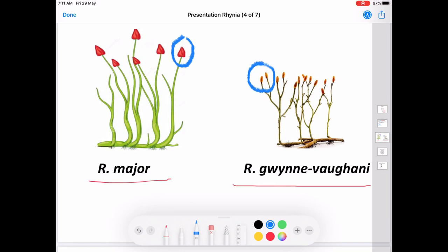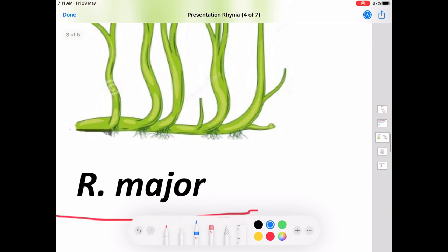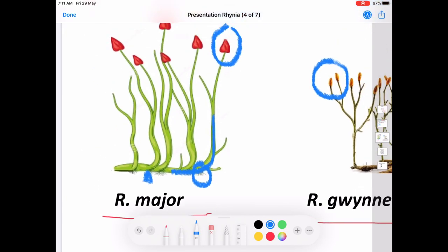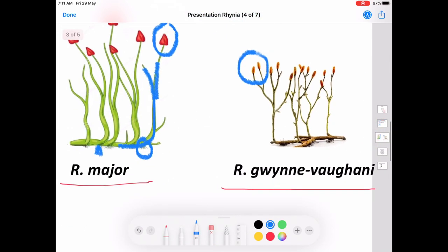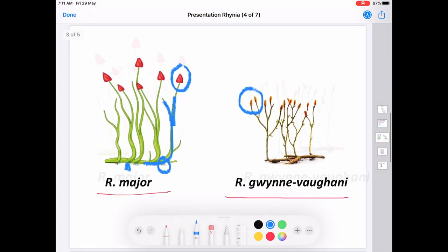The rhizome is prostrate and has rhizoids. Some of the rhizome turn upward, forming the aerial shoot. The aerial shoot is dichotomously branched. In both cases, you can see dichotomously branched aerial shoot.